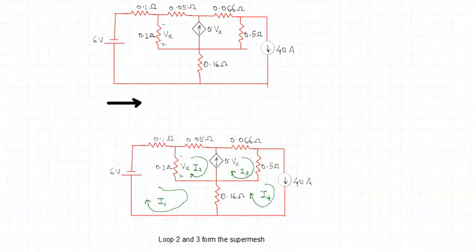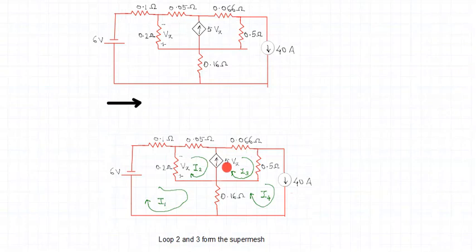Before applying KVL, let us identify whether there is a super mesh. Identify the current source — is it common between two loops? Yes, this current source is common to loop 2 and loop 3, so loop 2 and loop 3 form a super mesh. We will apply KVL to their combination, not to loop 2 and loop 3 independently.